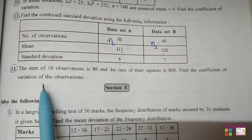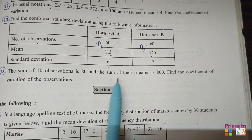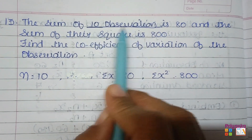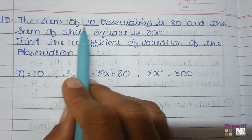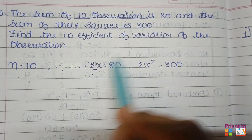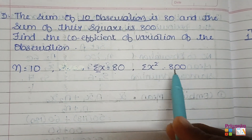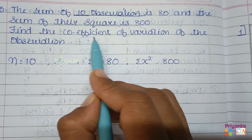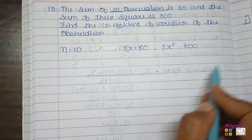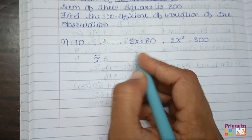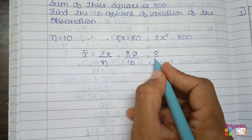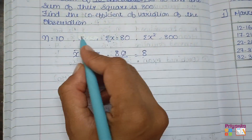Question number 13: the sum of 10 observations is 80, and the sum of their squares is 800. Find the coefficient of variation. Here n equals 10, sigma x equals 80, and sigma x-squared equals 800. The formula is standard deviation divided by mean, multiplied by 100. First find mean: sigma x divided by n equals 80 divided by 10 equals 8.